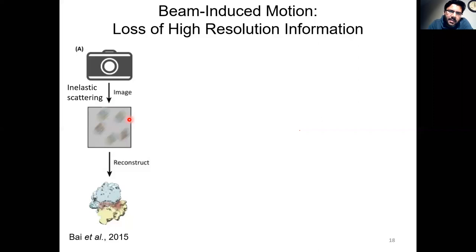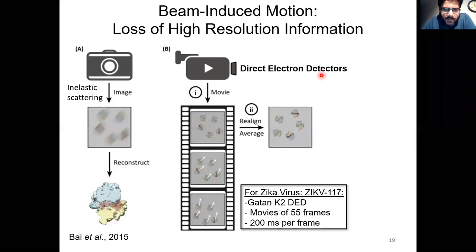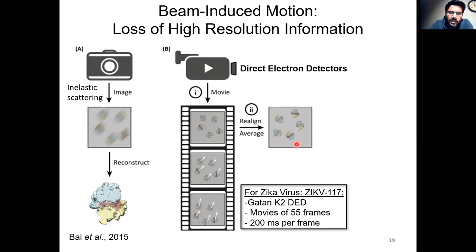Traditionally, cryo-EM has not been the technique of choice for high-resolution determination. This is because some electrons incident on biological samples cause blurring due to inelastic scattering — the same problem as motion blur in a photograph. In cryo-EM this is called beam-induced motion, wherein electrons deposit energy on samples causing particles to move while being imaged. This problem has now been overcome with the invention of the direct electron detector, which records movies instead of static images. These movies are fractionated into short frames, corrected for particle motion, realigned, and averaged to greatly boost the higher-resolution signal.